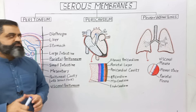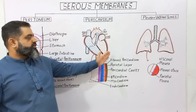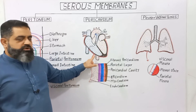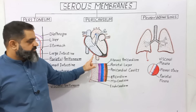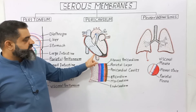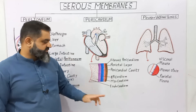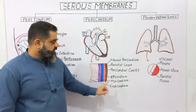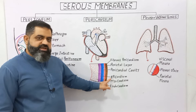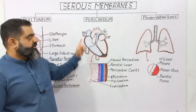Now let's discuss the second type of serous membrane, known as pericardium. 'Peri' means around, 'cardium' means heart — this membrane surrounds the heart. If we take a small portion of the pericardium and enlarge it in the diagram, the wall of the heart is made up of cardiac muscle and has three layers: the innermost layer is the endocardium, the muscular layer is the myocardium, and the outermost layer of the heart wall is the epicardium. Just outside the epicardium is the protective layer known as the pericardium.